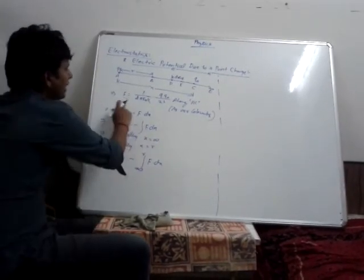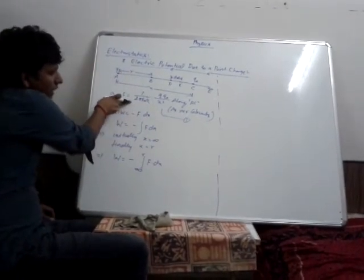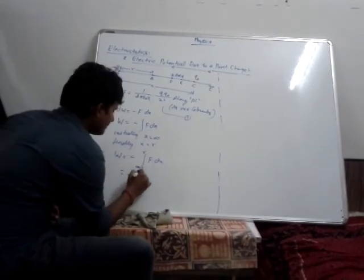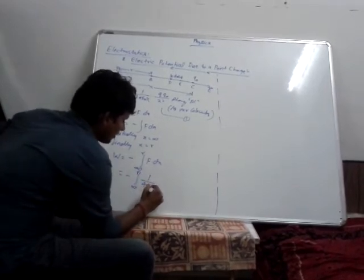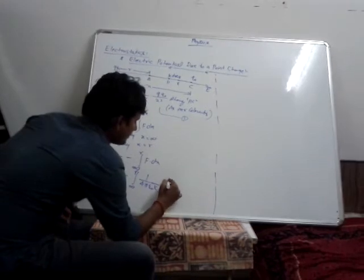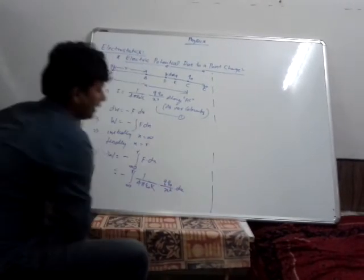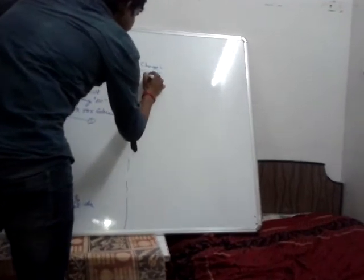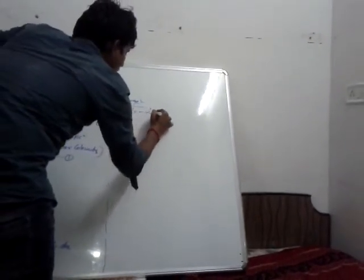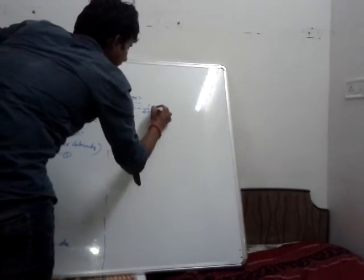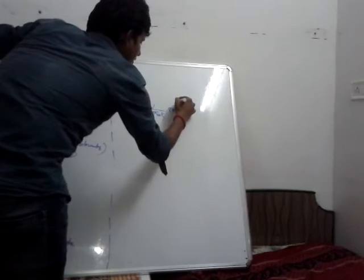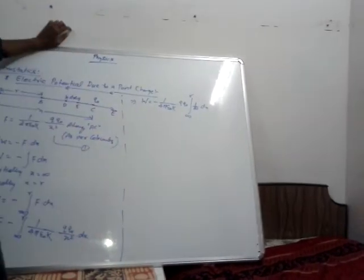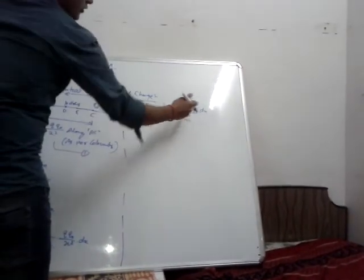Now, from the first equation we are going to substitute the value of F. So the equation will become: W equals minus 1 divided by 4 pi epsilon naught K into QQ0 divided by X squared, into dx. To continue, we take the constants out: W equals minus 1 divided by 4 pi epsilon naught K into Q Q0, times the integration of 1 by X squared with respect to X, where the limit is going to be infinity to R.